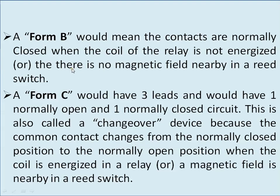For Form B rating, the contacts are normally closed. When the coil of the relay is not energized, and if you take a reed switch, the contacts are normally closed when there is no magnetic field nearby.